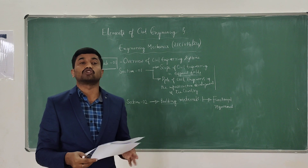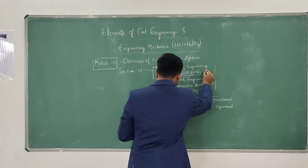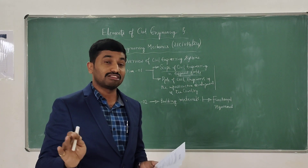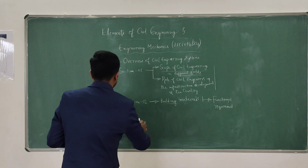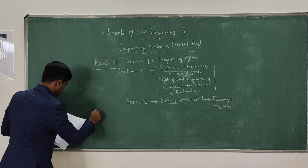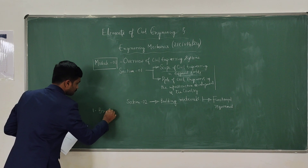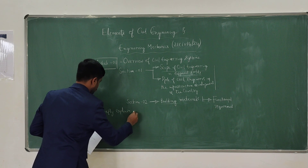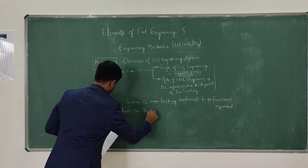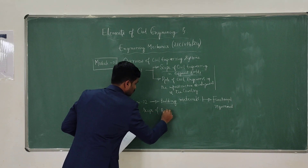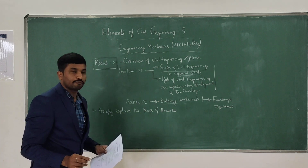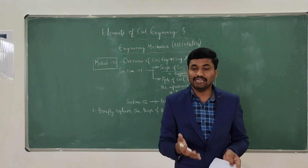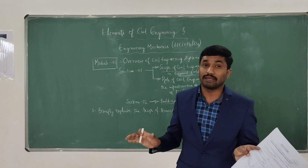So what are the expected questions? You may expect a question like 'briefly explain the scope of' for 5 or 10 marks. Generally for 10 marks. The first expected question is: 'Briefly explain the scope of branches.' If the question is general and is for 10 marks, you may choose any 2 or 3 branches. If they are specific, that is very, very important.